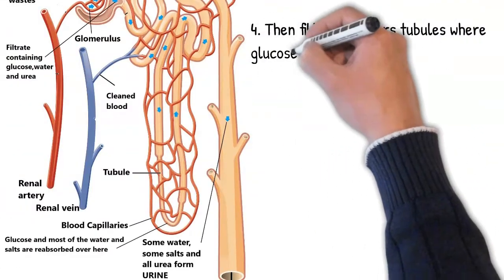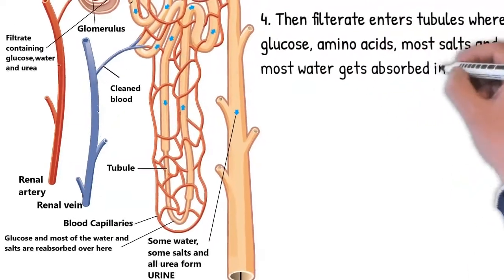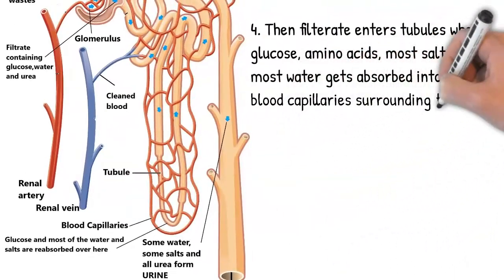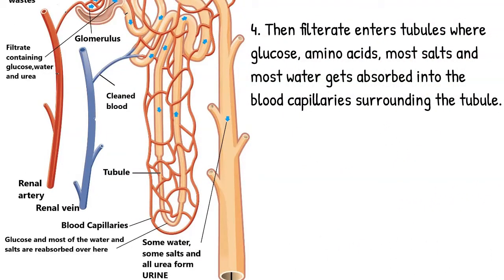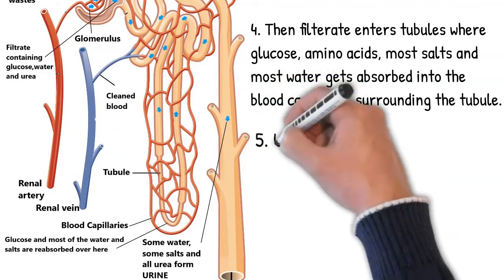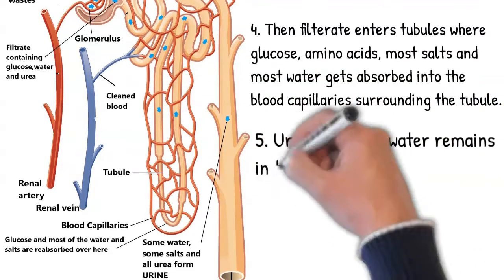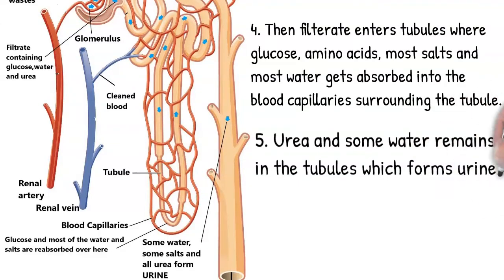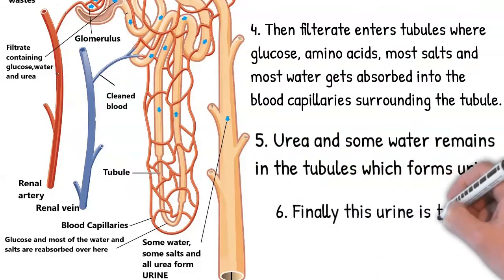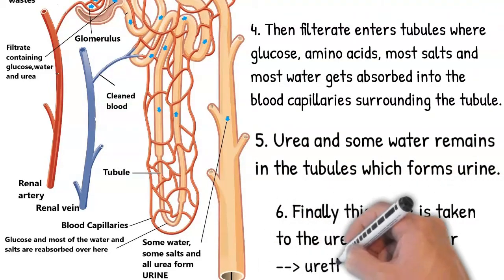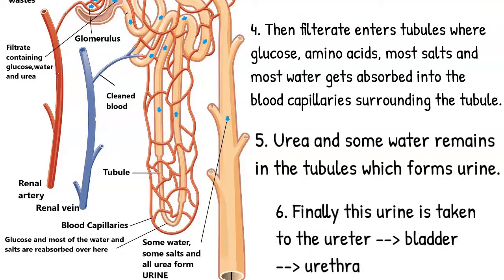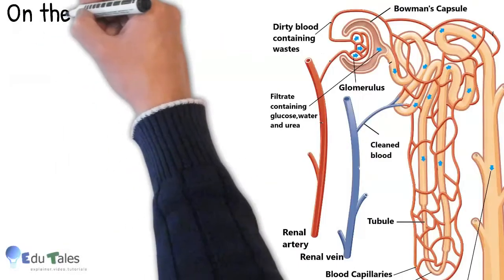The filtrate then enters tubules, where glucose, amino acids, most salts, and most water get absorbed back into the blood capillaries surrounding the tubule. Remember, all urea, some salts, and some water remain in the tubules only, and finally they form urine. This urine comes out of the tubule and then enters ureter, then bladder, and finally comes out through urethra.